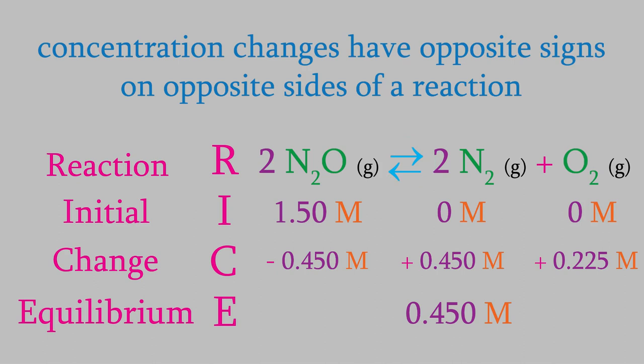Now, we can figure out the equilibrium concentrations. The initial N2O concentration was 1.50 molar, and it decreases by 0.450. So, the final concentration is 1.05 molar. Meanwhile, the oxygen concentration increases to 0.225 molar.